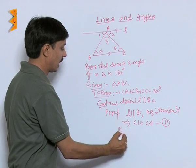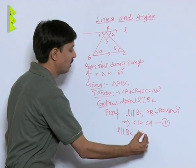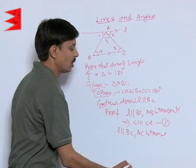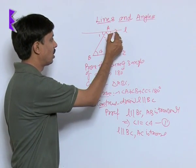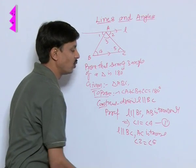Also, you can say L is parallel to BC and AC is also transversal. So, what conclusion will come? That angle 2 is equal to angle 5.